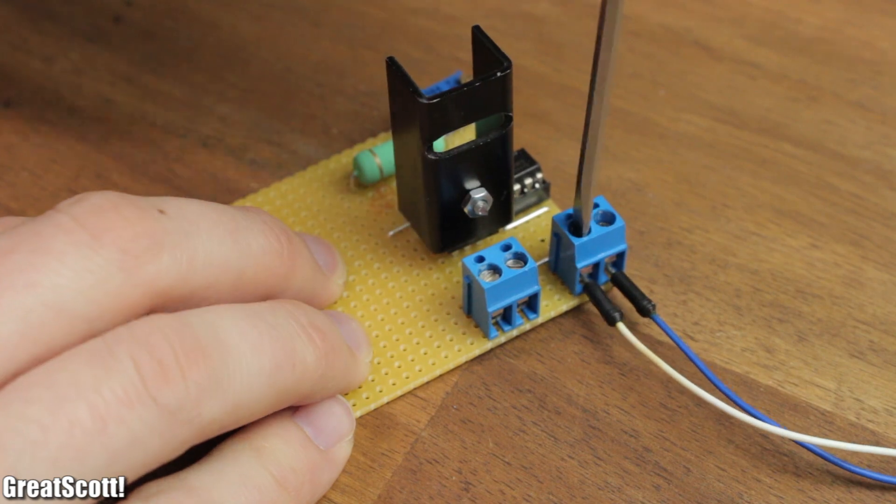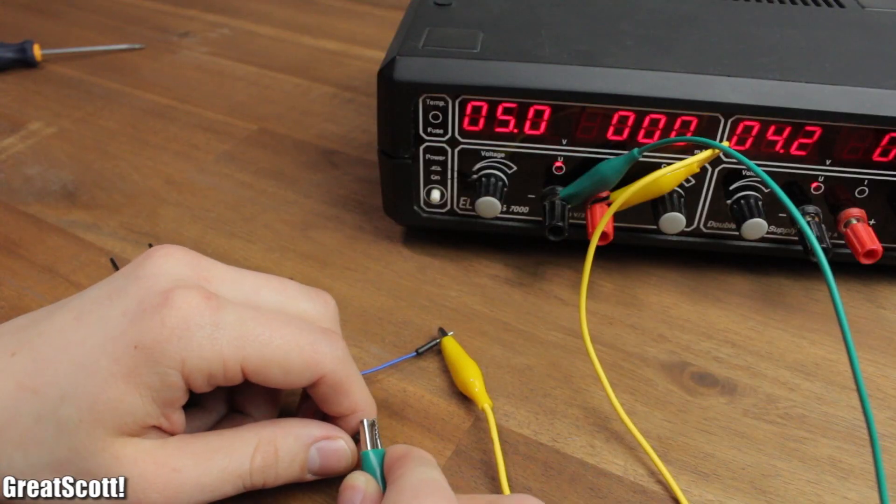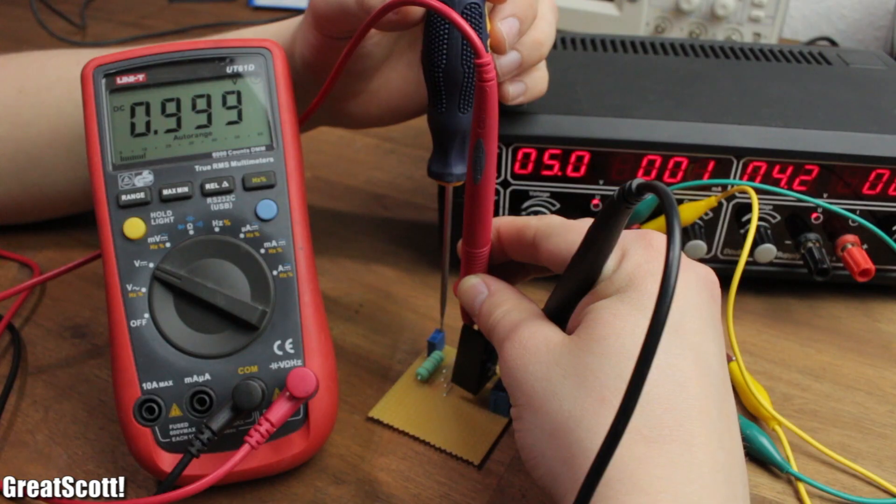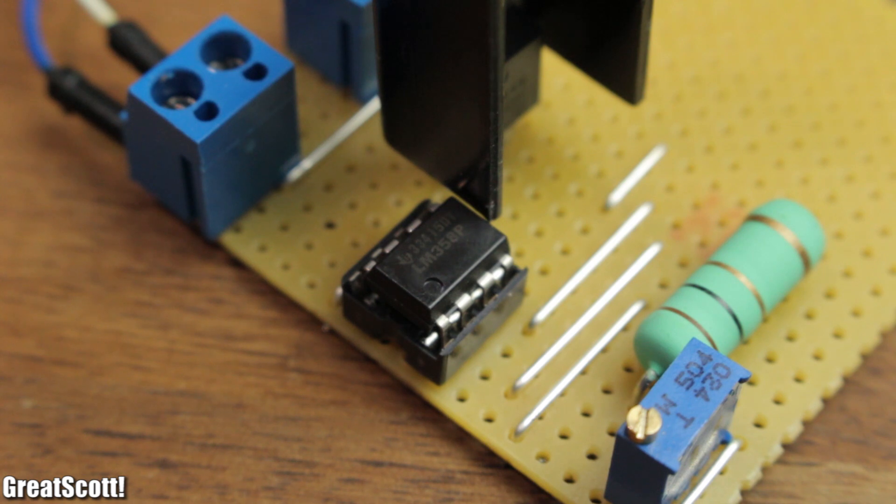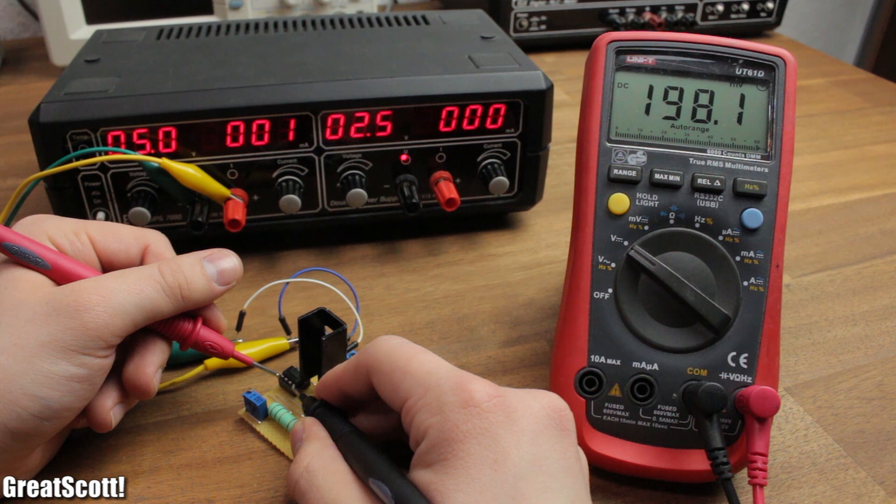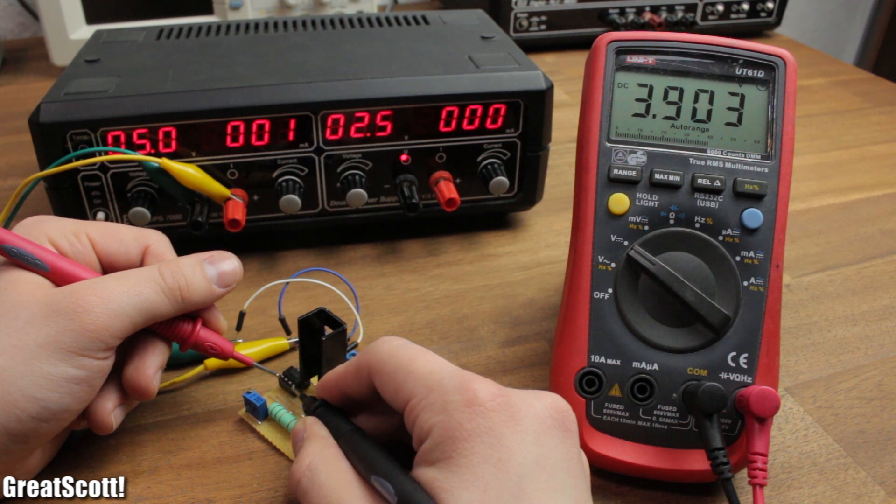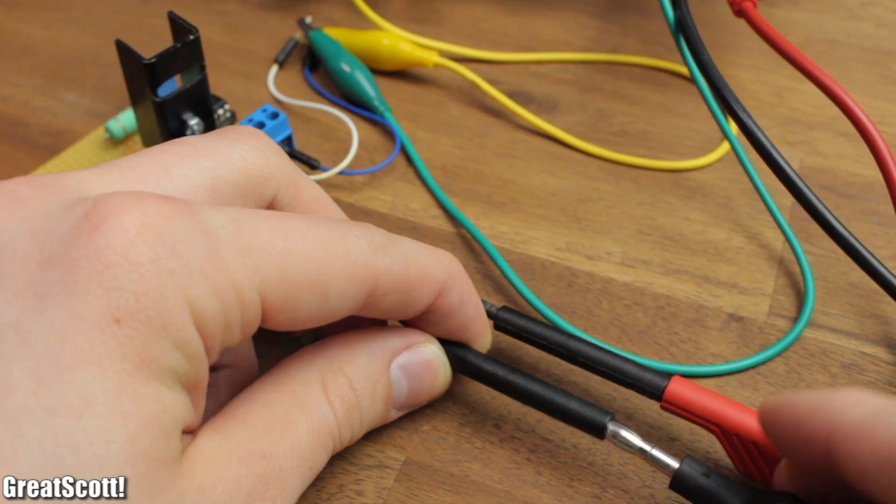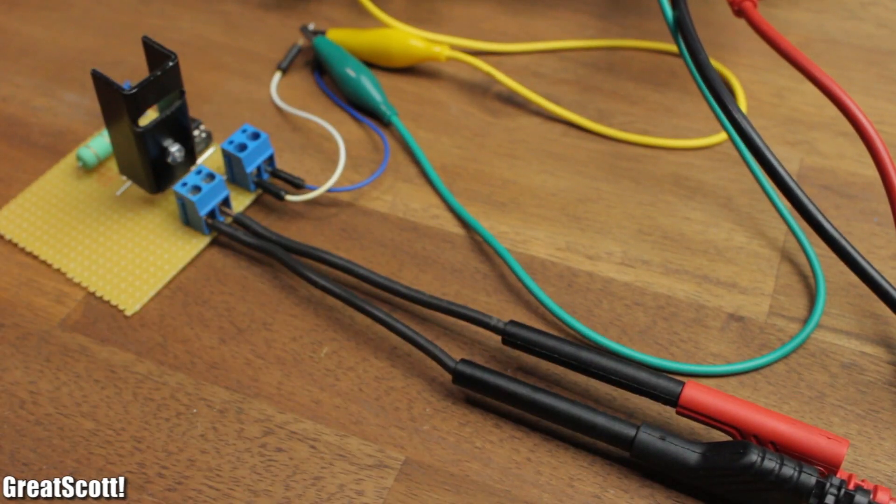Now let's hook the circuit up to a 5 volt power source. We can adjust the voltage for the VIN pin with the potentiometer. Let's set it to 1 volt. The op-amp here works as a simple voltage comparator. If VIN is higher than our VREF, the output gets pulled high to 4 volts. This makes the drain to source path of the MOSFET conductive, and current can flow through the 1 ohm resistor as soon as a power supply is connected to the load terminal.